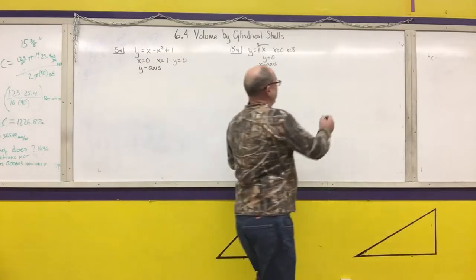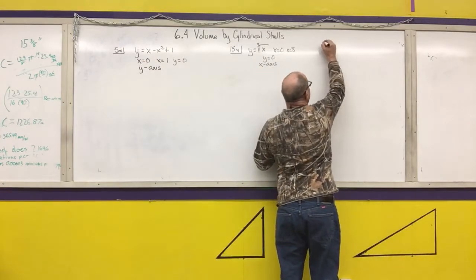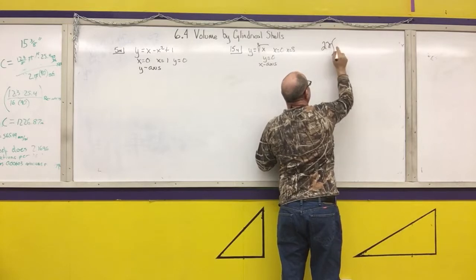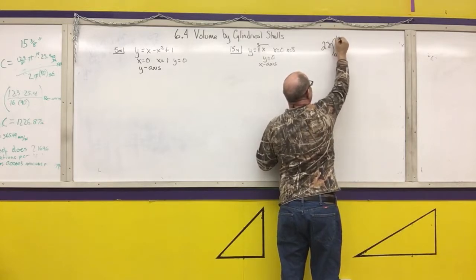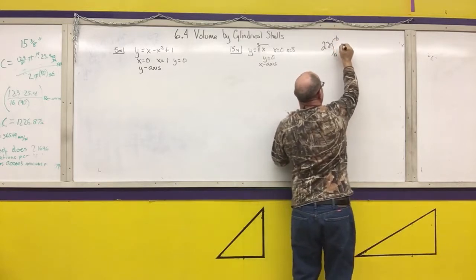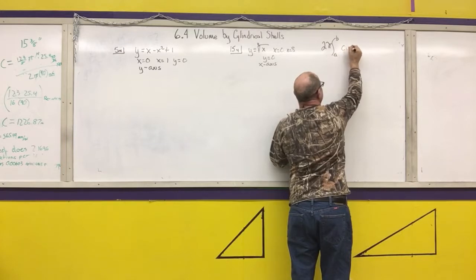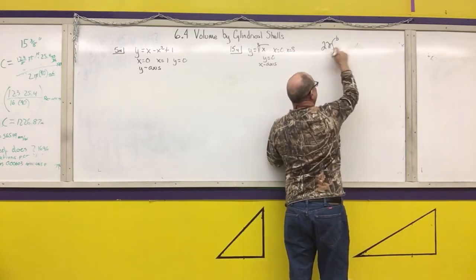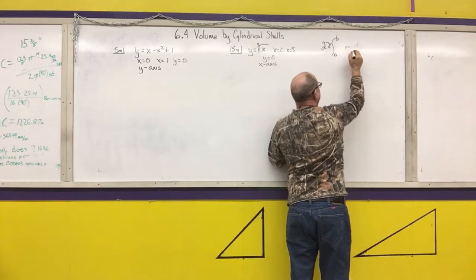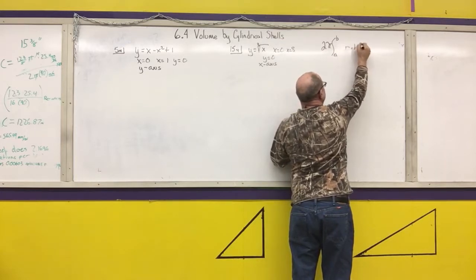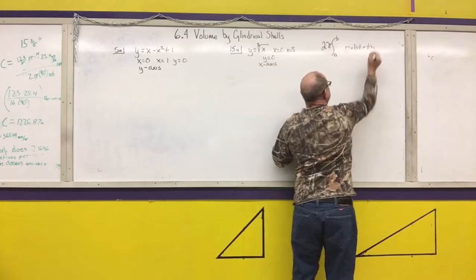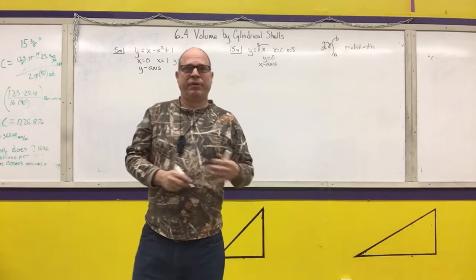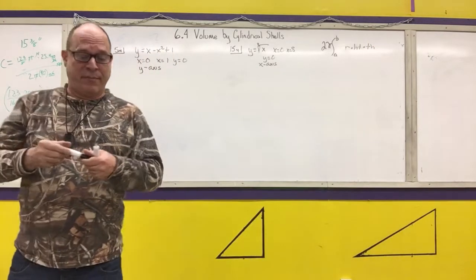First thing I want to remember is the formula. The formula is 2π times the integral from A to B of the circumference times the height — so it's 2πr, the radius times the height times the thickness. That's what I want to remember as my formula; that's the way I remember it.